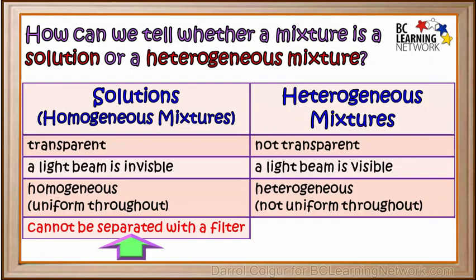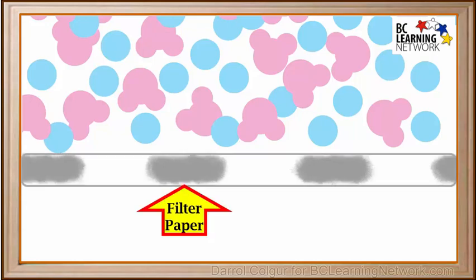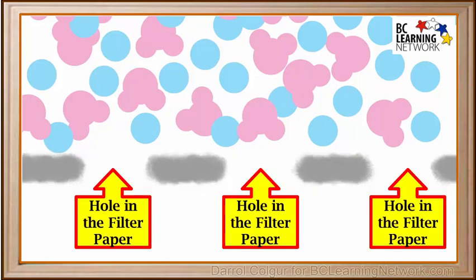We'll make a note in our table that solutions cannot be separated with a normal paper filter. To help us understand how a solution goes through a filter paper, we can imagine magnifying the solution so much that we can see its molecules. We'll pretend this is the filter paper, and these spaces are the tiny holes in the filter paper.